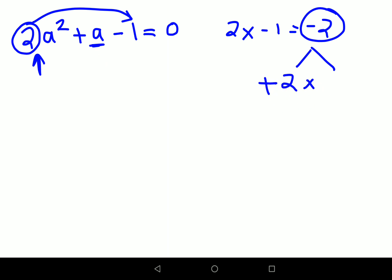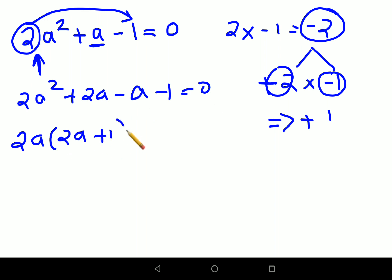So we will do plus 2 times minus 1. That will get you a plus 1. So we will have 2a squared plus 2a minus a minus 1 equals to 0. So 2a common, so you will have 2a plus 1 minus 1. So here you will have just a.